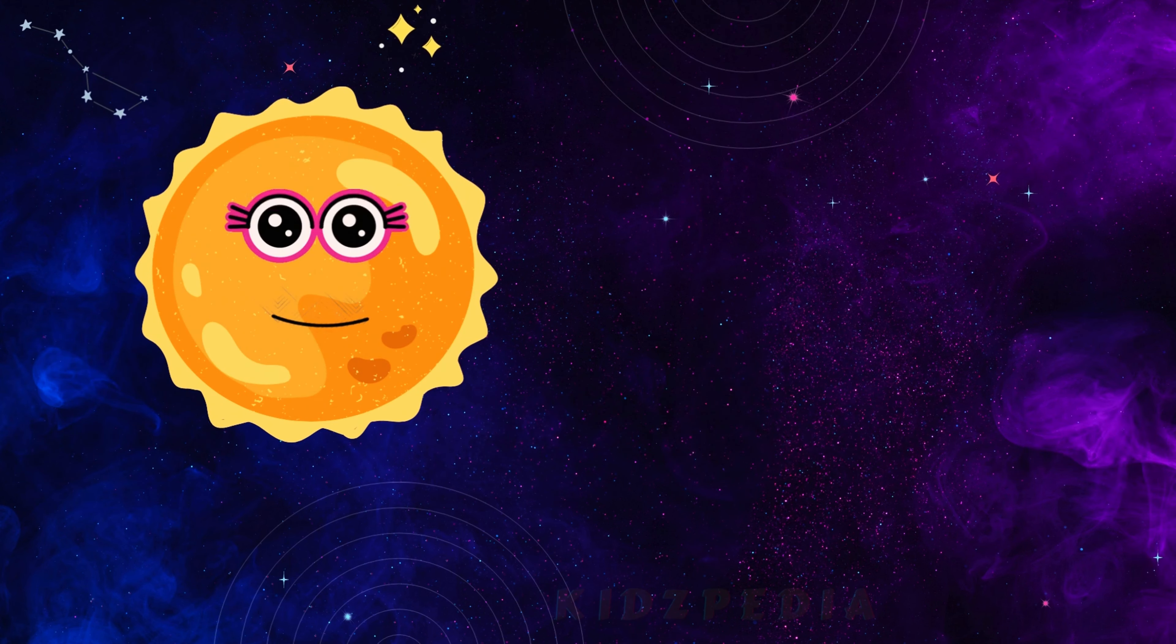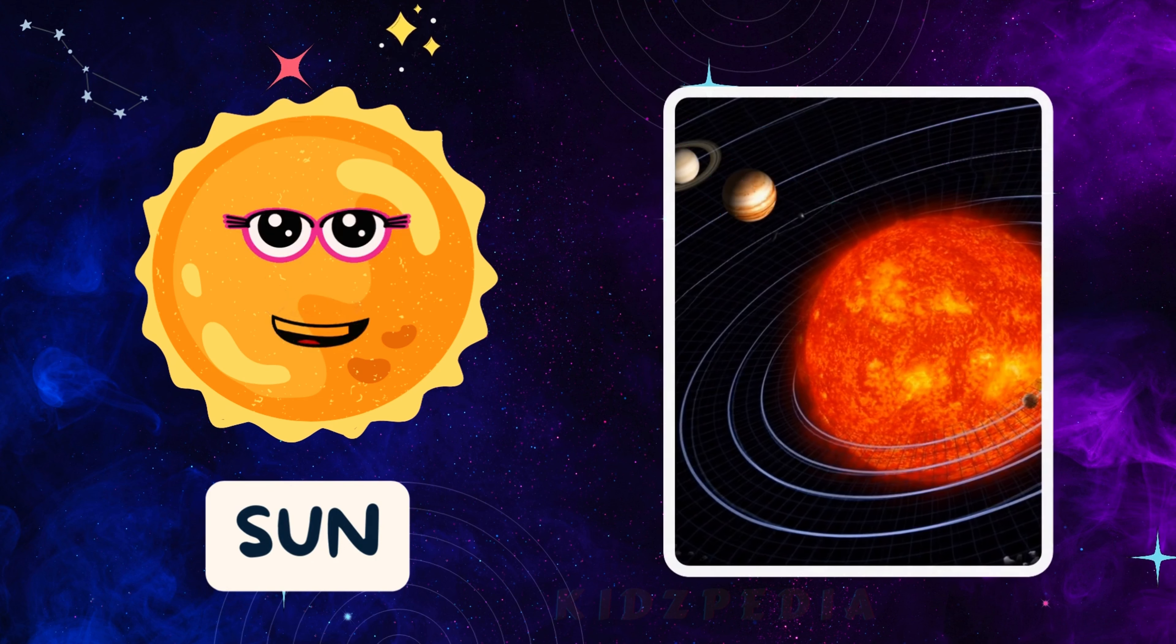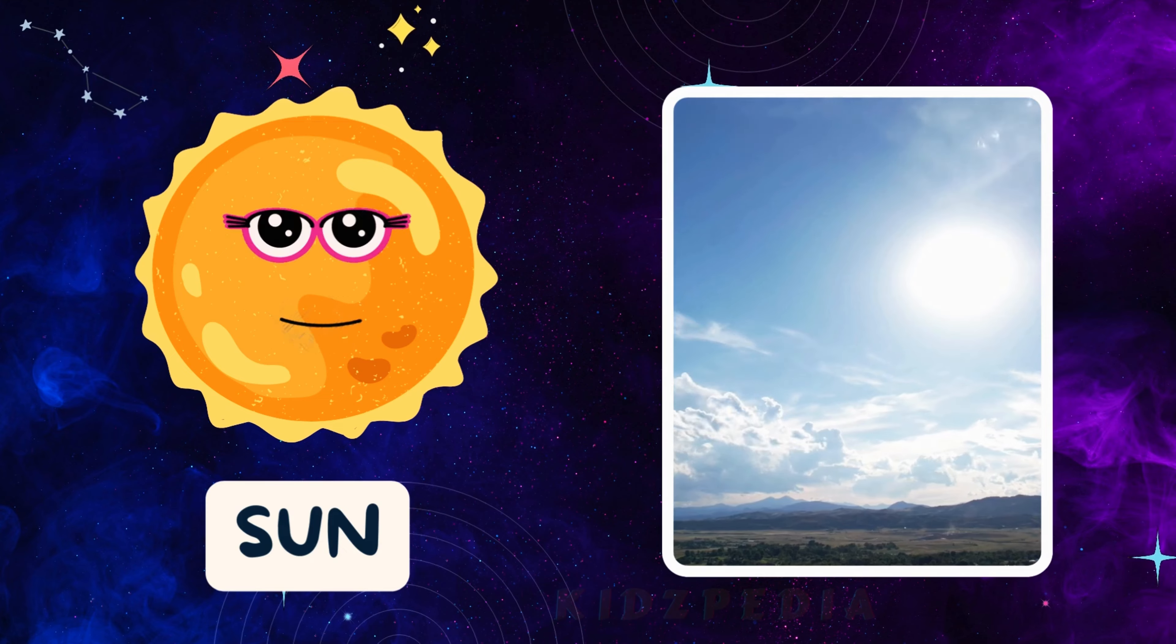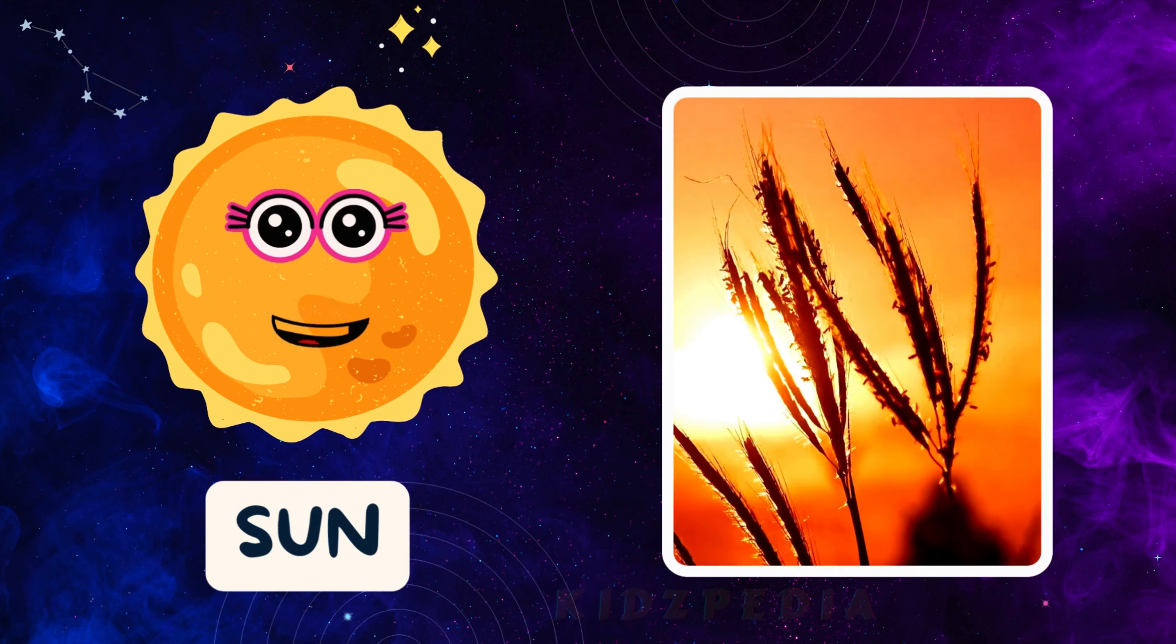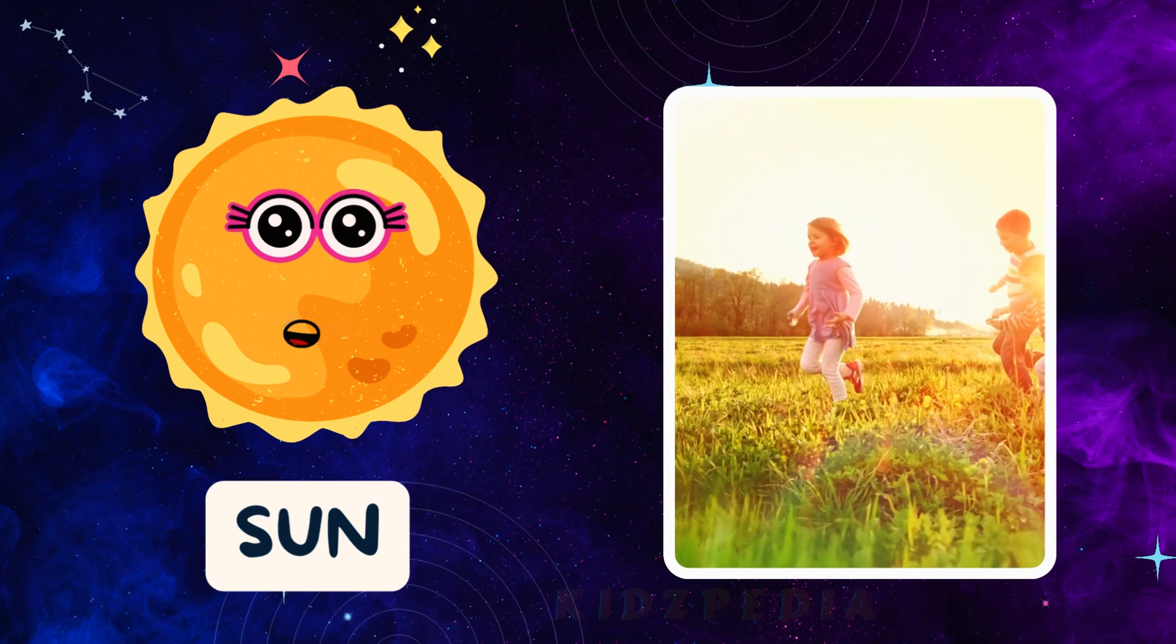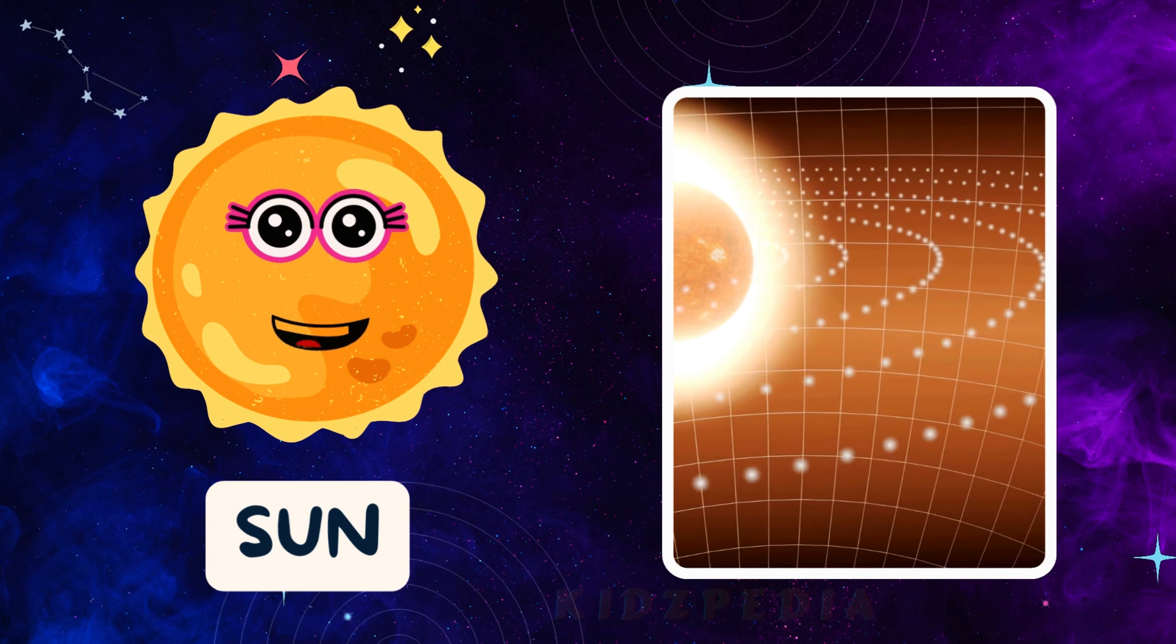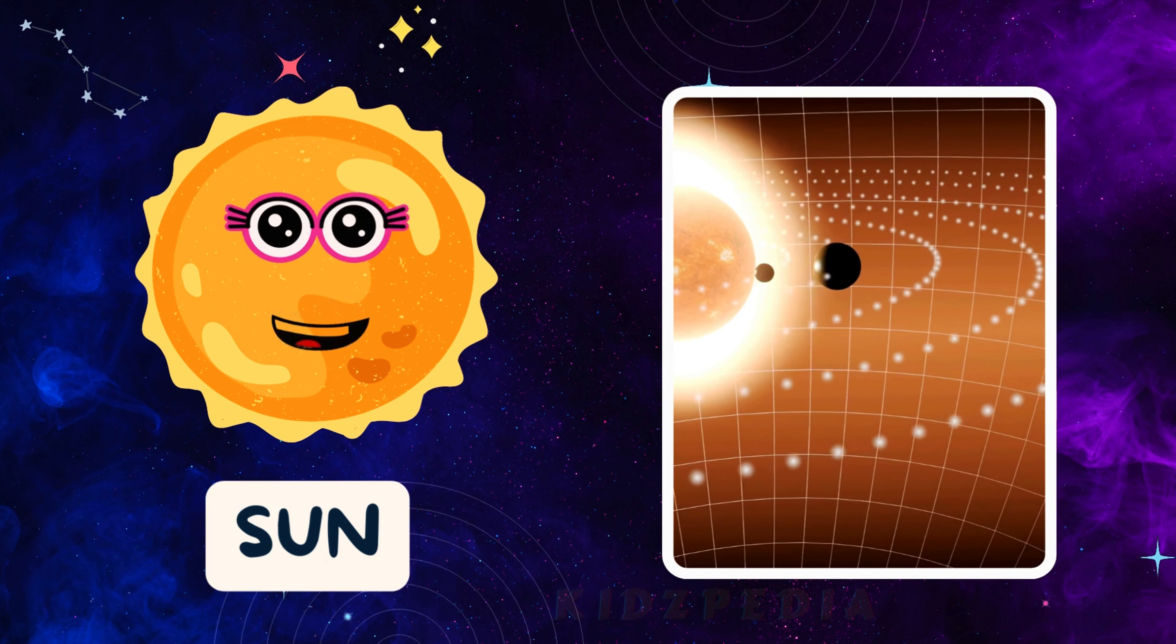Hello, everyone. I'm the sun, and I'm the star of the solar system. I'm here to give you light and warmth every day. Without me, there'd be no daytime, no sunshine, and no fun outdoor play. I'm the heart of our solar system, and I make sure everything orbits around me.